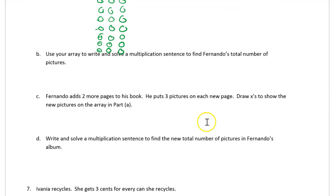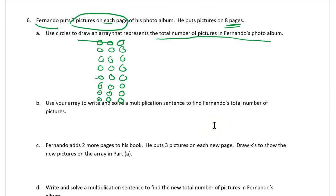Now it says B, use your array to write and solve a multiplication sentence to find Fernando's total number of pictures. So his total number of pictures, we're just going to write the multiplication sentence. It's eight rows of three equals 24. You can skip count it by threes or by eights, or just count them all one at a time and you'll get 24.